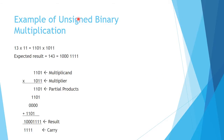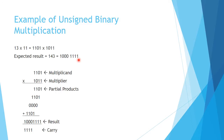An example of unsigned binary multiplication: 13 times 11, which in binary is 1101 times 1011. We can expect a result of 143, which in binary equals 10001111.